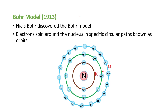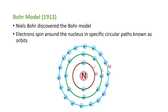The next model is Bohr's model, proposed by Niels Bohr in the year 1913. According to him, electrons spin around the nucleus in circular paths known as orbits. He numbered these orbits as K, L, M, and so on. These are also called energy shells — circular path-like structures around the nucleus inside the atom.